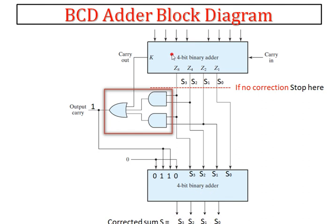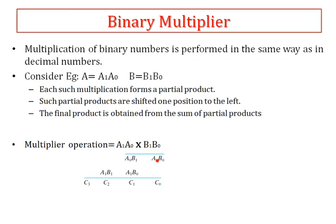To summarize: I take two numbers A and B and perform addition. If the result is BCD, no further steps are needed. If the result is not a BCD number, I add plus 6 to correct it and obtain the final corrected BCD output. This is about the BCD adder. Next I am going to deal with the binary multiplier circuit.